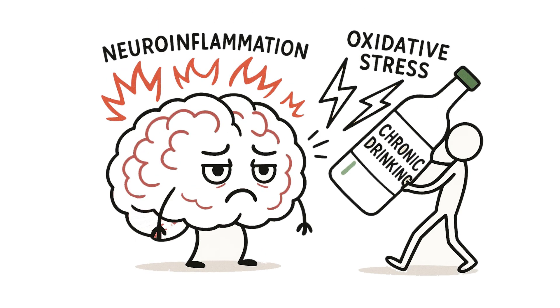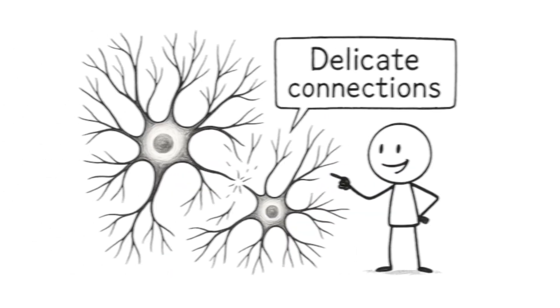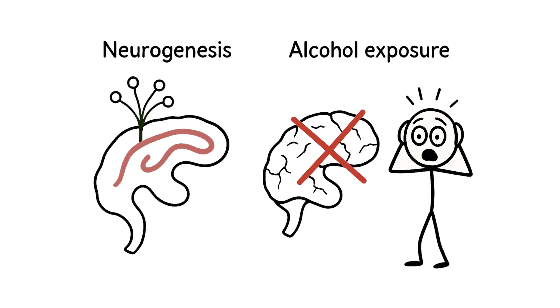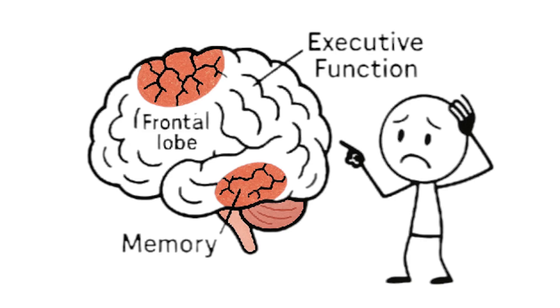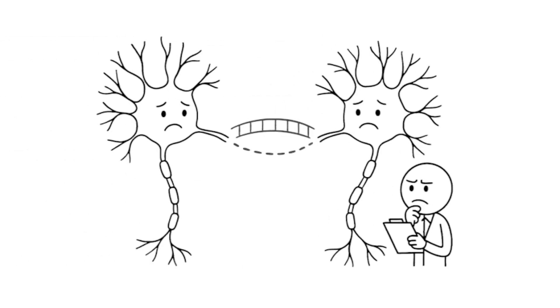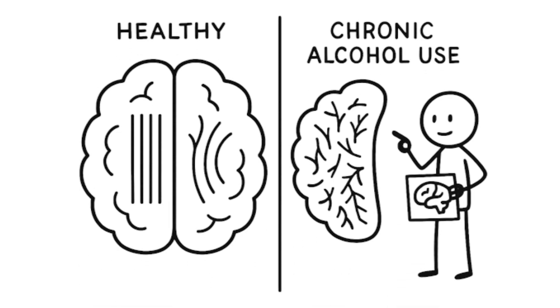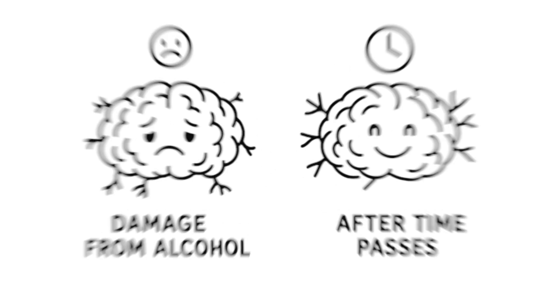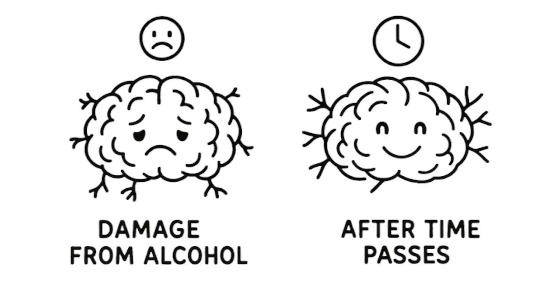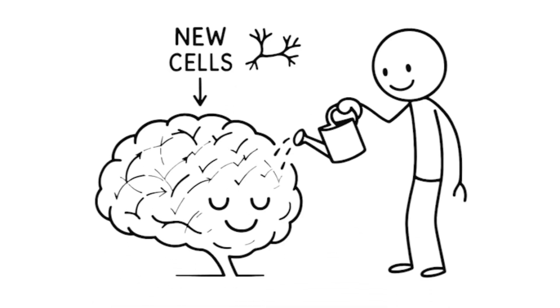Chronic heavy drinking causes neuroinflammation and oxidative stress that damages dendrites and synapses, the delicate branches and connections that allow neurons to communicate. It also interferes with neurogenesis in the hippocampus and can cause brain tissue to shrink, particularly in the frontal lobe and hippocampus, regions crucial for executive function and memory. While neurons themselves might survive, their ability to connect and communicate becomes severely compromised. Brain imaging studies show that chronic alcoholics have reduced white matter integrity and decreased efficiency in neural networks. The damage is often reversible with sustained abstinence, as the brain can rebuild connections and even generate new cells, but it takes months to years of recovery.